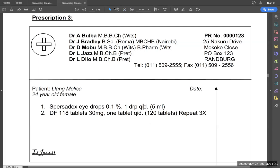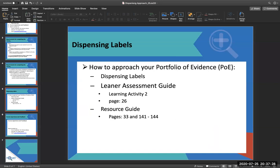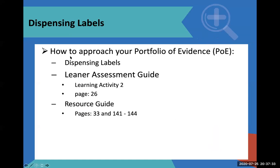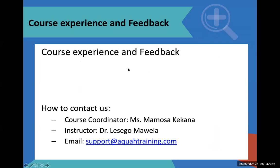I hope you have managed to grasp and learn something from this session. I'm going to give you some time for questions. Today we have dealt with how to approach your portfolio of evidence in terms of dispensing labels — this is learning activity two, on page 26 of your learner assessment guide. Your resource guide pages are 33 and 141 to 144. You are able to communicate with us via email, and when you want to send your portfolio of evidence, use that same email address.